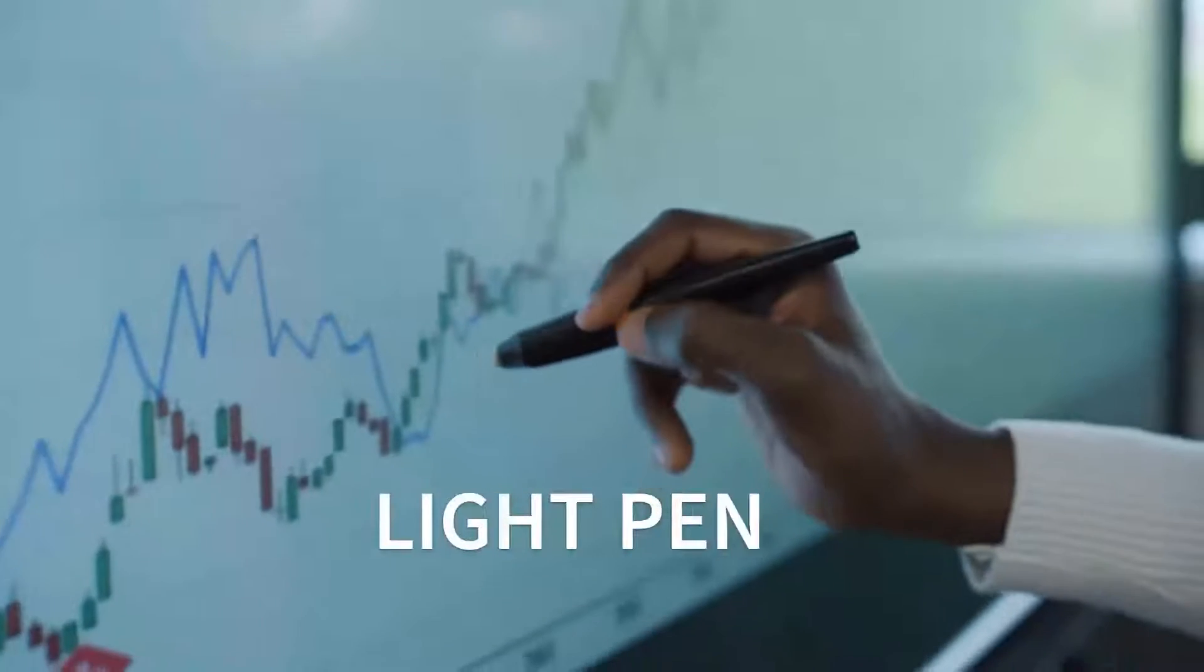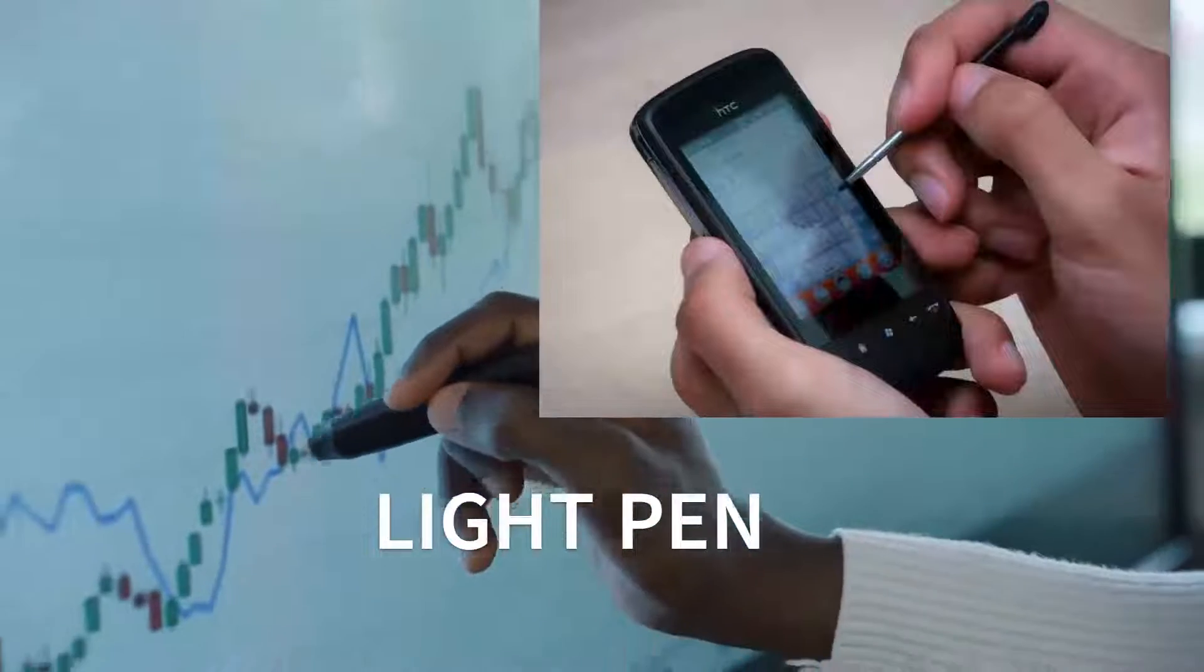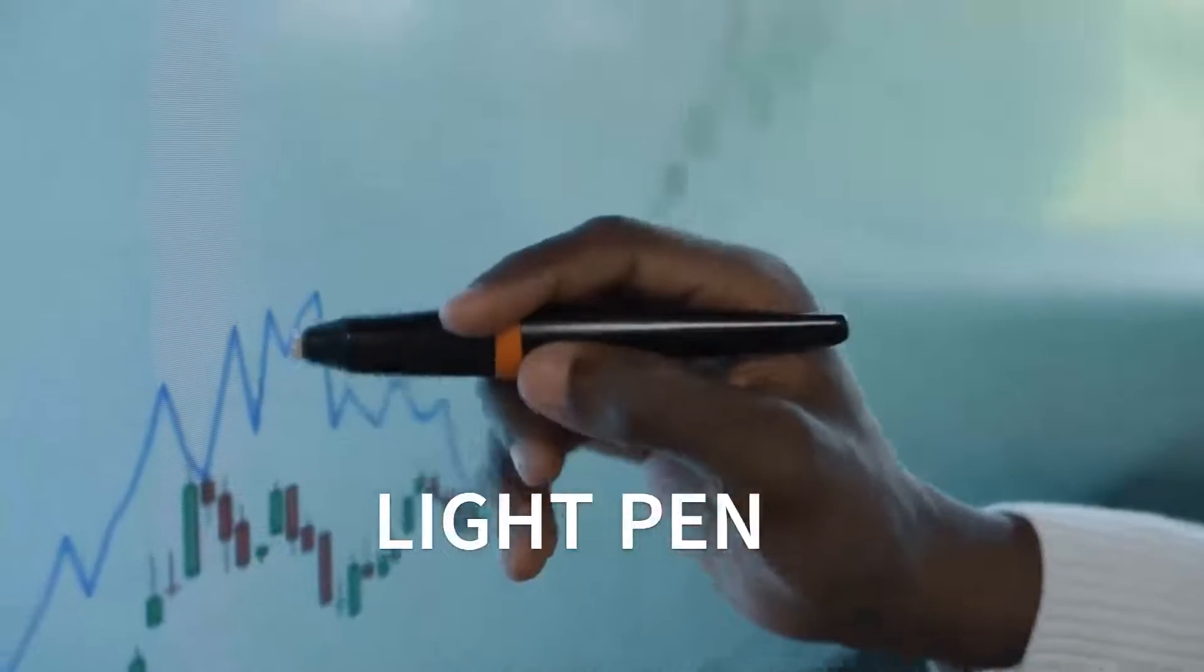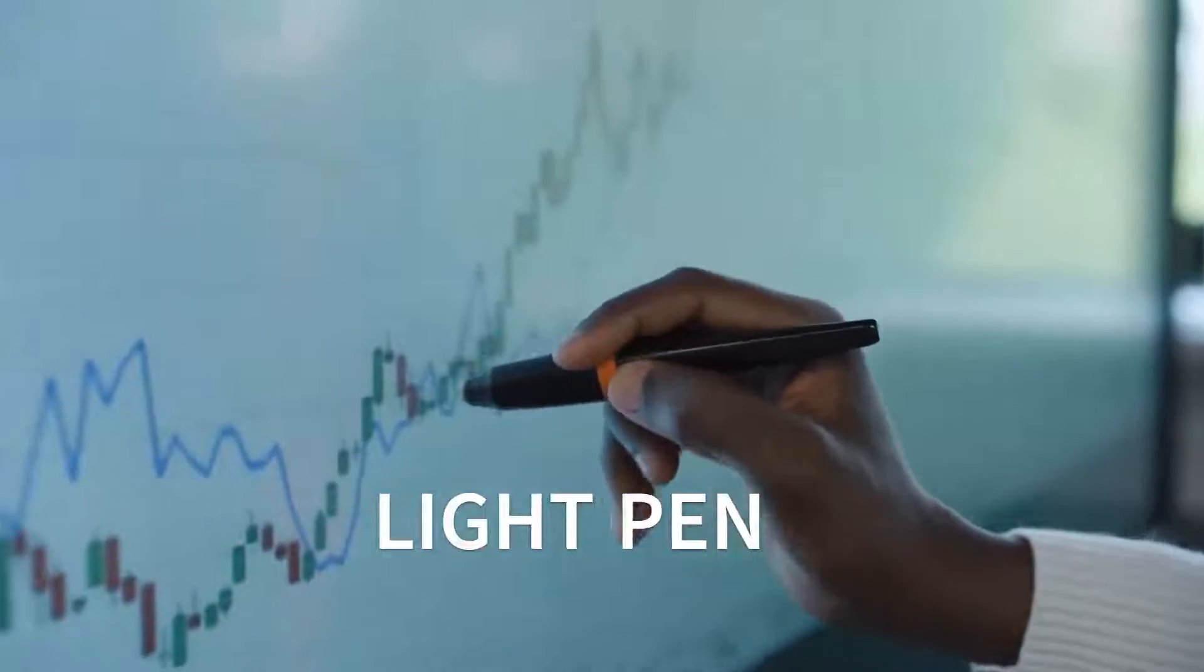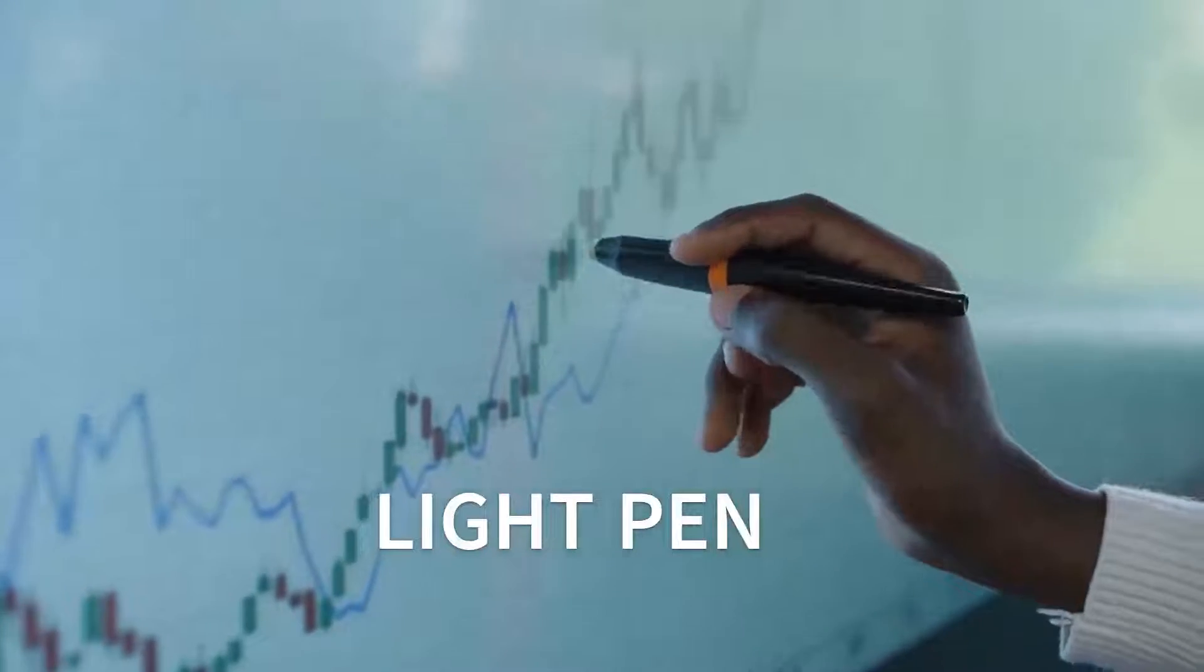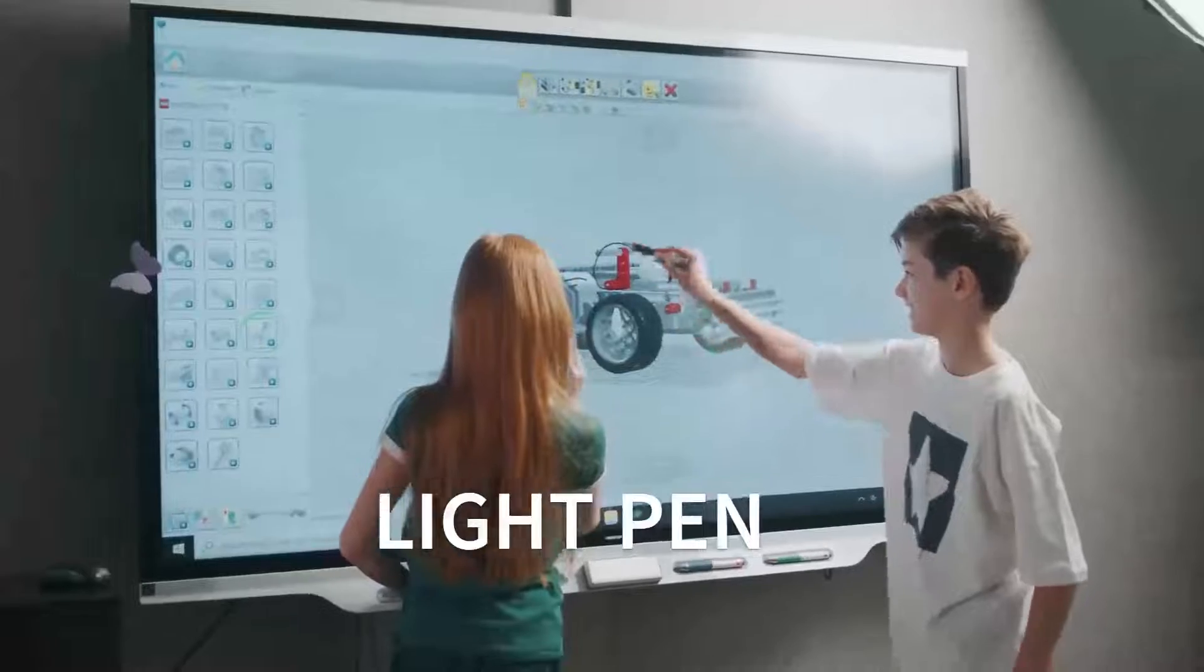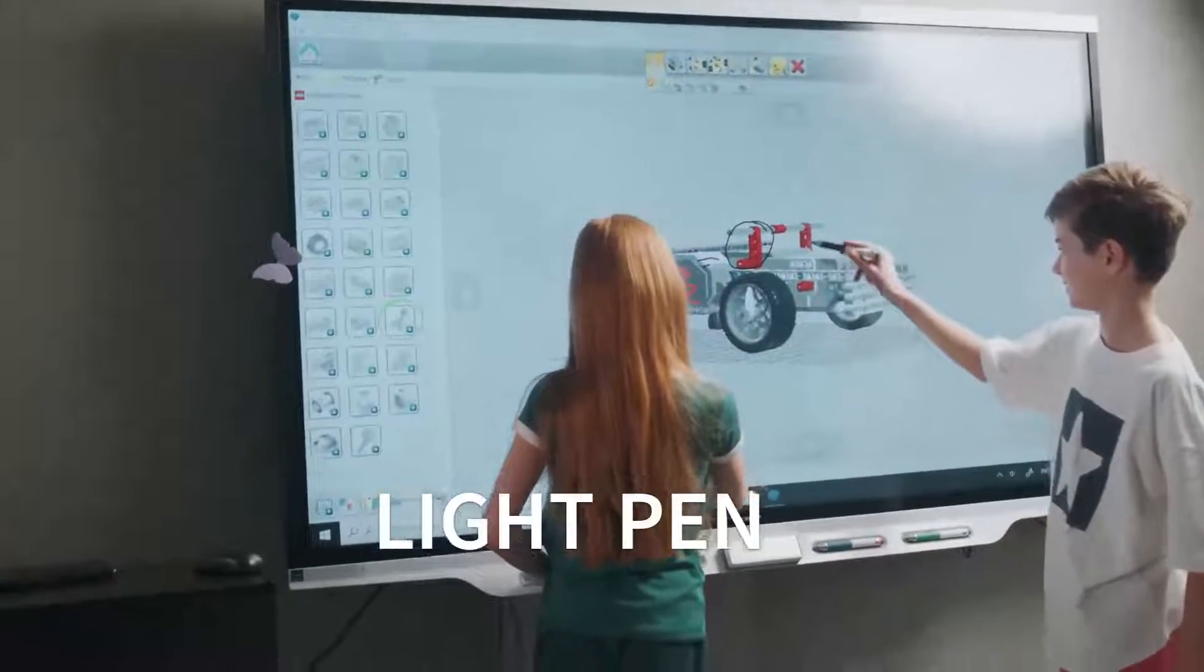Light Pen is a pointing device similar to a pen. It is used to select a displayed menu item or draw pictures on the monitor screen. It consists of a photocell and an optical system placed in a small tube. When the tip of a light pen is moved over the monitor screen and the pen button is pressed, its photocell sensing element detects the screen location and sends the corresponding signal to the CPU.